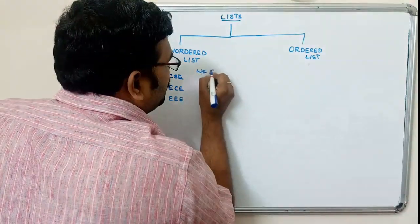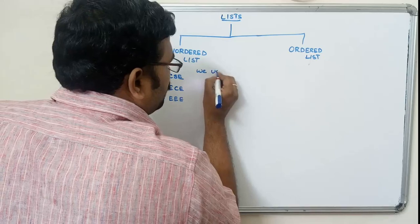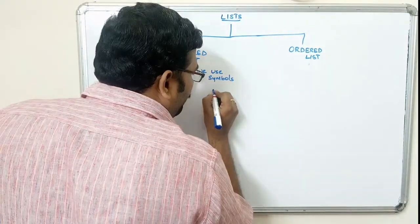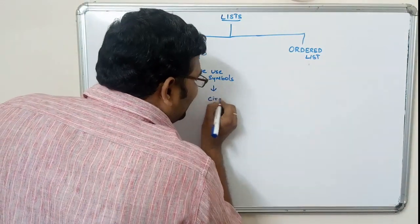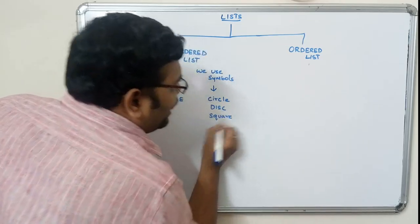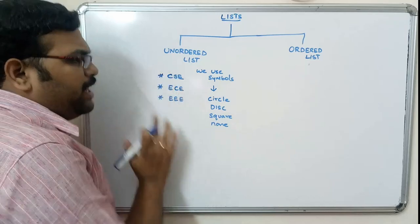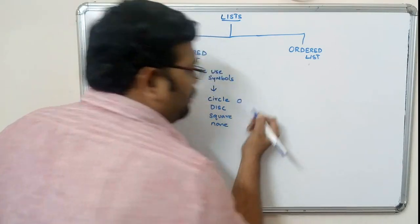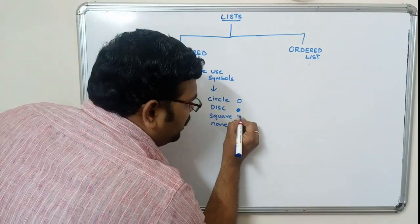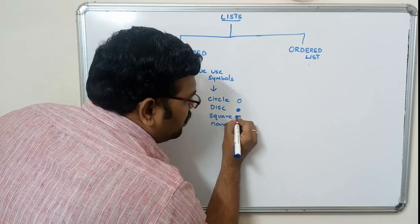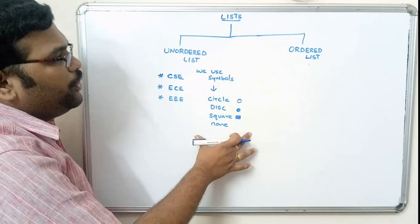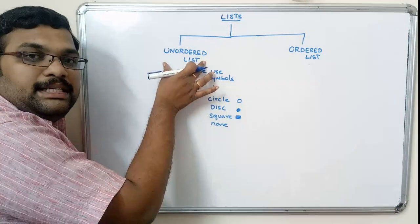In HTML, the symbols we can use are: circle, disc, square, or none. None means nothing will be displayed. Circle means a round circle will be displayed. Disc means a solid round circle, and square means a solid square. These are the symbols we use to implement the unordered list.